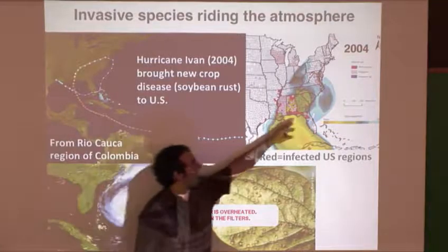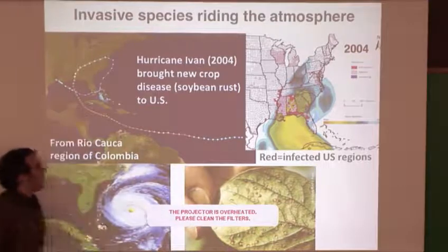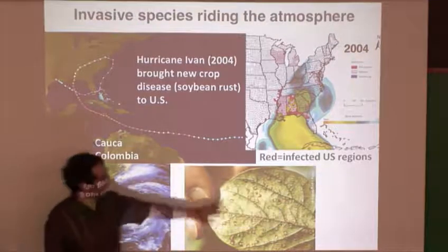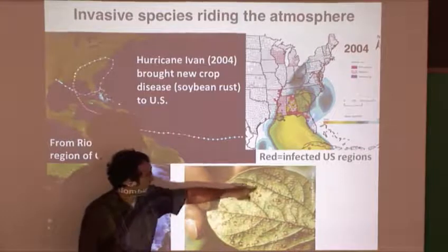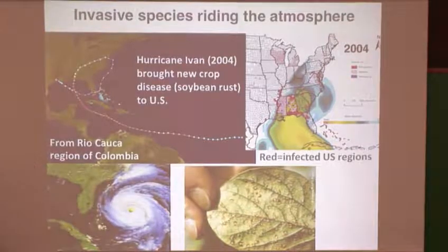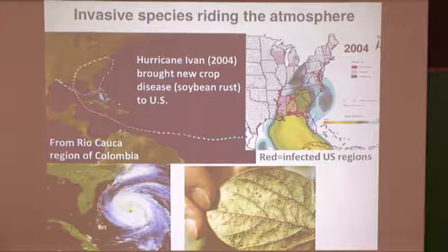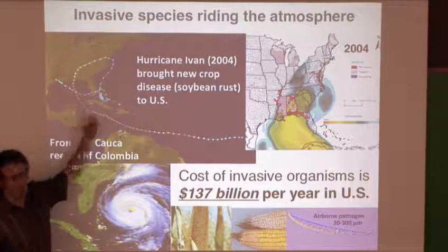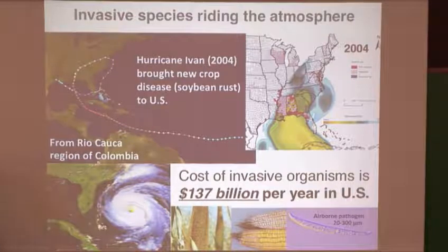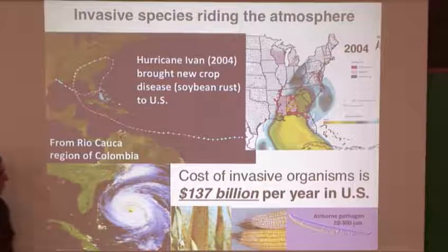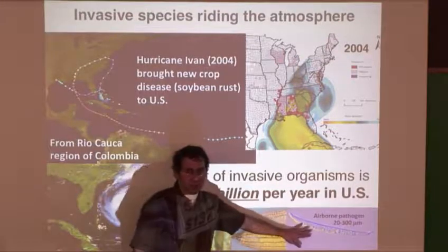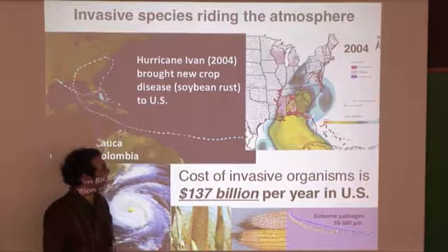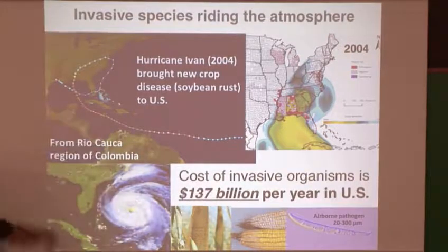Hurricane Ivan brought a disease affecting soybean to the Gulf Coast of the US — these are the infected counties. It leads to brown spots that pathologists call rust. If you consider the cost of all invasive organisms affecting the US per year and sum them up, it's over a hundred billion dollars per year in lost crops just in the US. We're talking about small things on the order of 10 to 100 microns that affect staple crops like wheat, corn, and soybean.